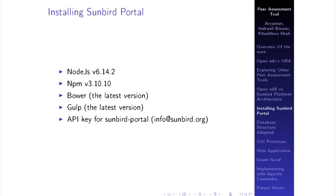We started with installing the Sunbird portal. It is specifically required that you use Ubuntu 16.04 LTS — we tried the 18th version and it does not work. You have to use Node.js version 6.14.2; newer versions are available but do not work. The npm version also has to be specifically that version. Another issue is that you have to get the API key from the Sunbird team by mailing them. Furthermore, you have to manually set up the environment variables for Sunbird, which is not mentioned in the documentation — so that is an issue.